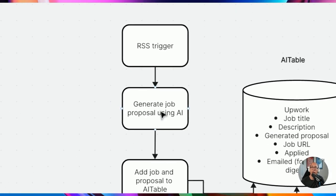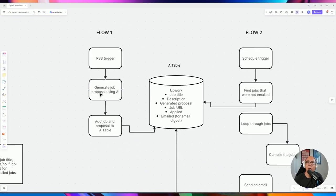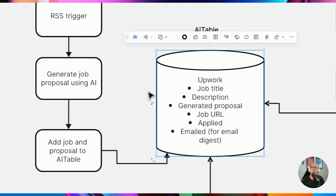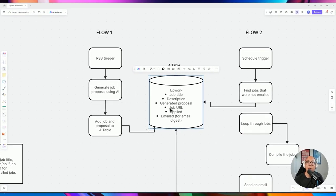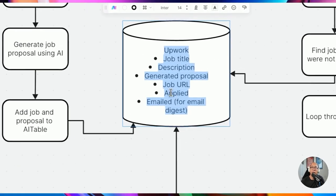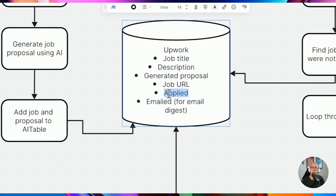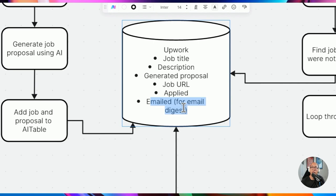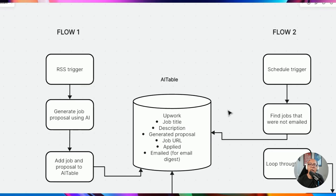Once the proposal is created based on the job description, title, and our qualifications, a record is added to Airtable including the job title, description, the generated proposal, and the job URL. The applied field tracks whether we applied, and the emailed field is for the email digest — tracking whether that email has been sent.